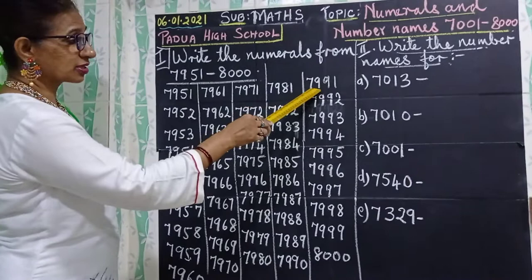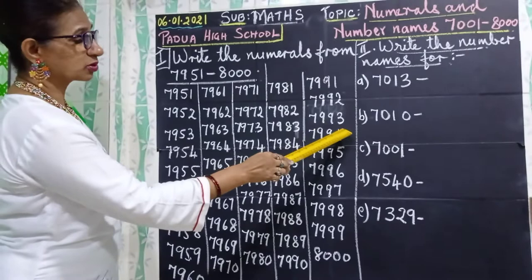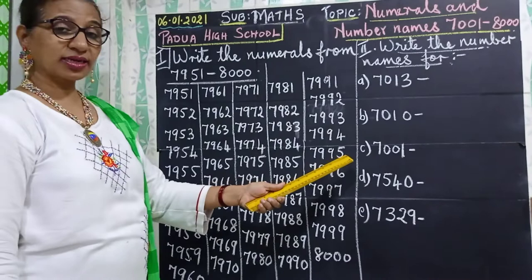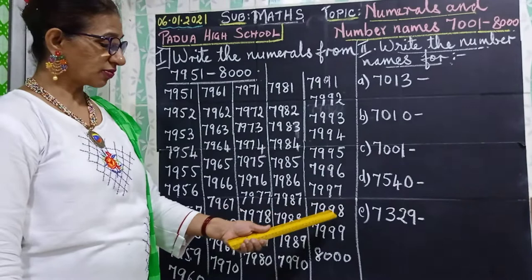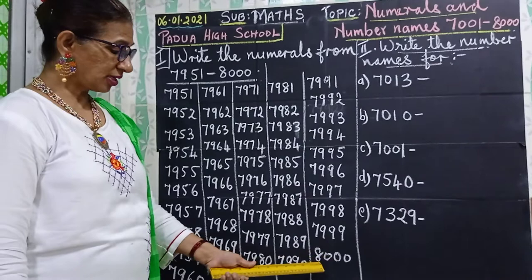Then 7991, 7992, 7993, 7994, 7995, 7996, 7997, 7998, 7999, and 8000. So these are the last 50 numbers.